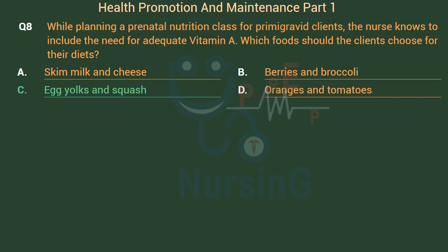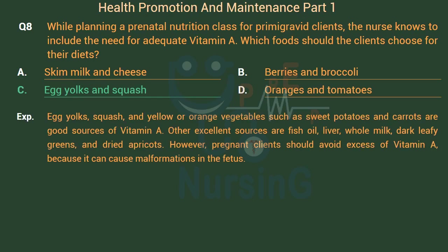The right answer is Option C: Egg yolks and squash. Egg yolks, squash, and yellow or orange vegetables such as sweet potatoes and carrots are good sources of vitamin A. Other excellent sources are fish oil, liver, whole milk, dark leafy greens, and dried apricots. However, pregnant clients should avoid excess vitamin A because it can cause malformations in the fetus.